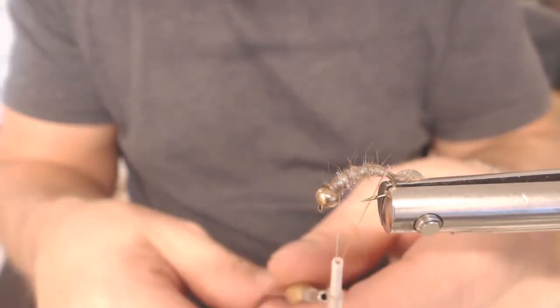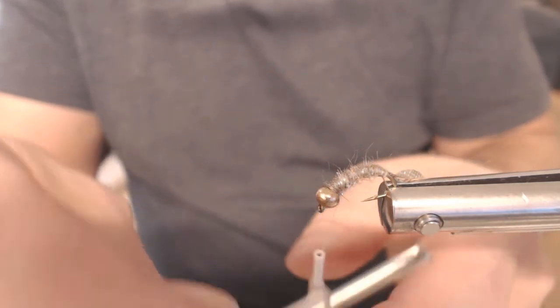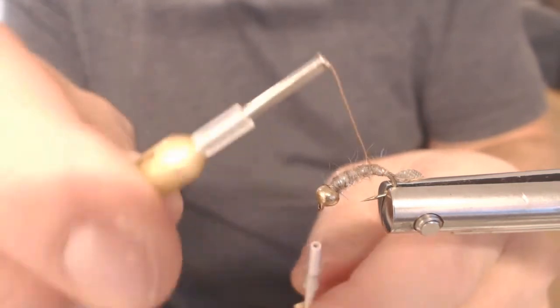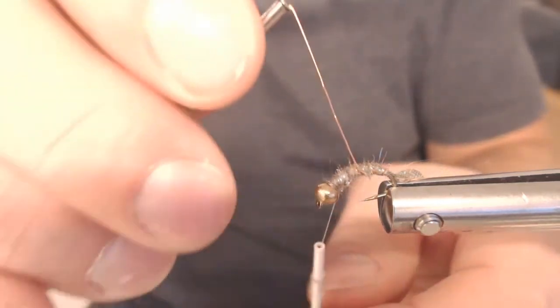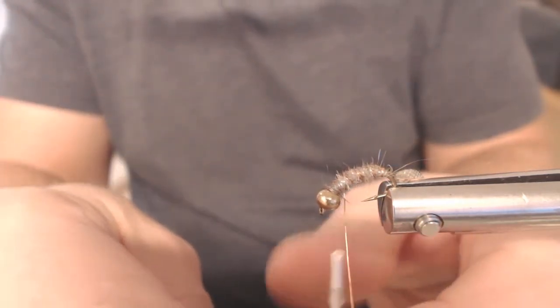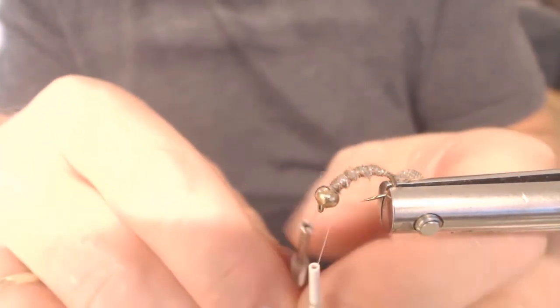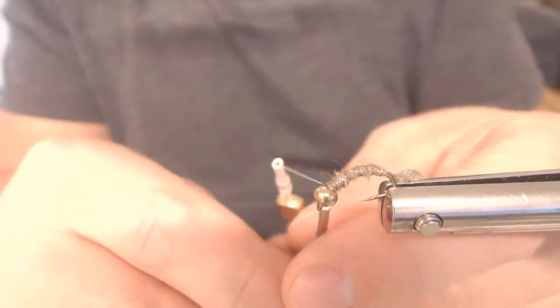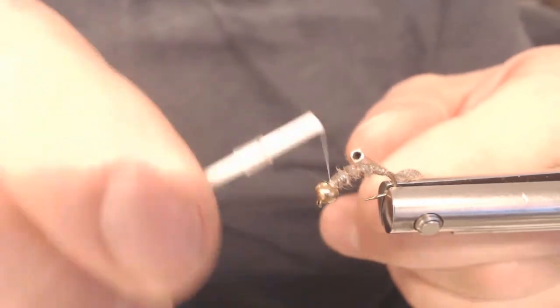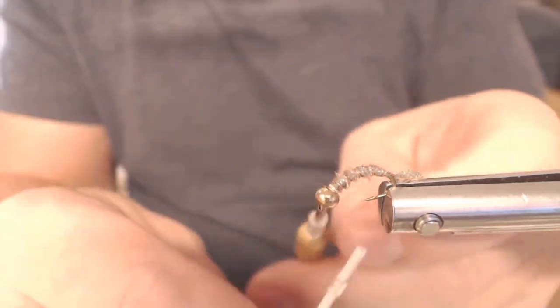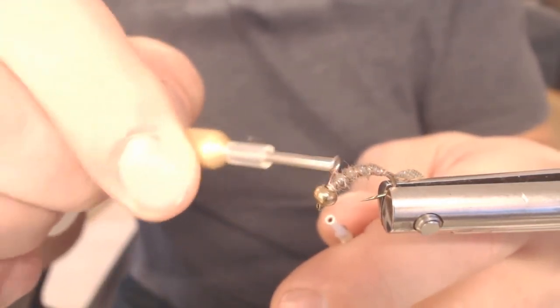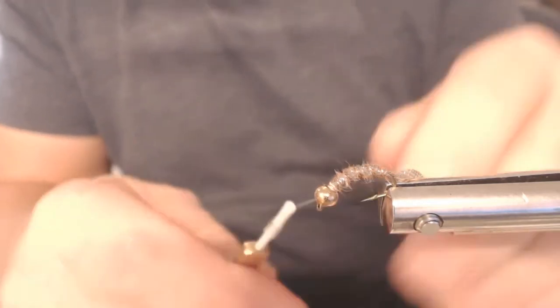Og så kommer ribingen. Der ribber jeg andre veien. Så kommer jeg her med bindetråden min. Binder av. Så tar jeg rett og slett å bare bruke metalltrettigheten. Og dermed var den løs. (And then comes the ribbing. I rib the other way. Then I come here with my binding thread. Bind off. Then I simply use the metal tool. And then it was loose.)